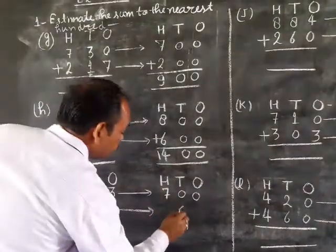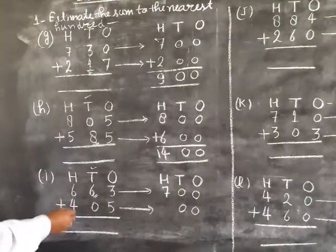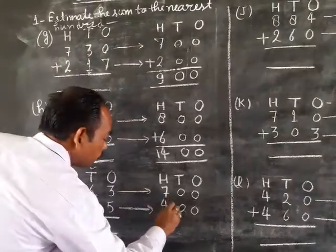Part (c): Tens place digit is 0. 0 is less than 5, so hundreds digit stays the same: 4. Now we add.